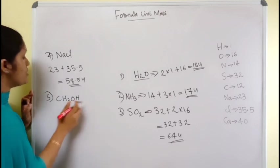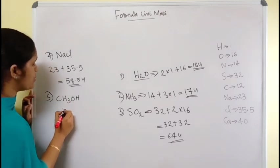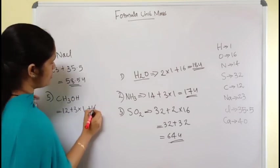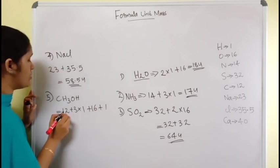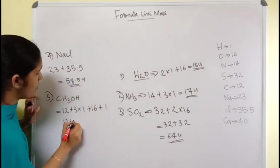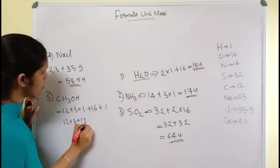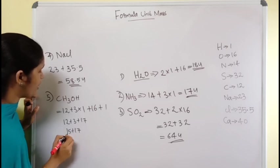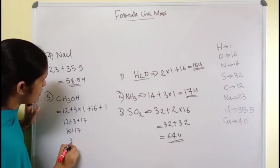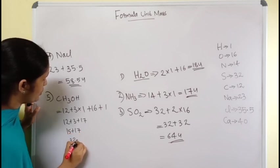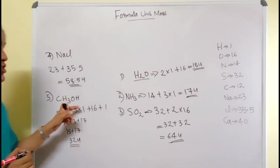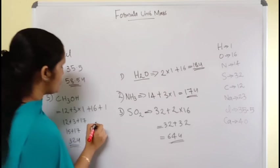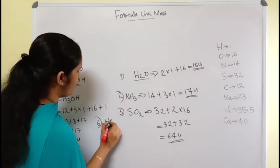The fifth compound is CH₃OH, which is methanol. One carbon's mass is 12, three hydrogens give 3 × 1 = 3, oxygen is 16, and one more hydrogen is 1. So: 12 + 3 + 16 + 1 = 32 u. The formula unit mass of methanol, CH₃OH, is 32 u.